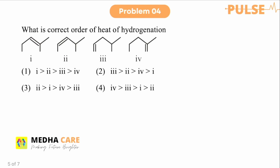Moving to the fourth question, which is a very important question: what is the correct order of heat of hydrogenation? Let us first see the concept. In a hydrogenation reaction, suppose you have a double bond and you add hydrogen to the molecule — this is hydrogenation. You will get an alkane, and along with it you will get heat, as bonds are forming.